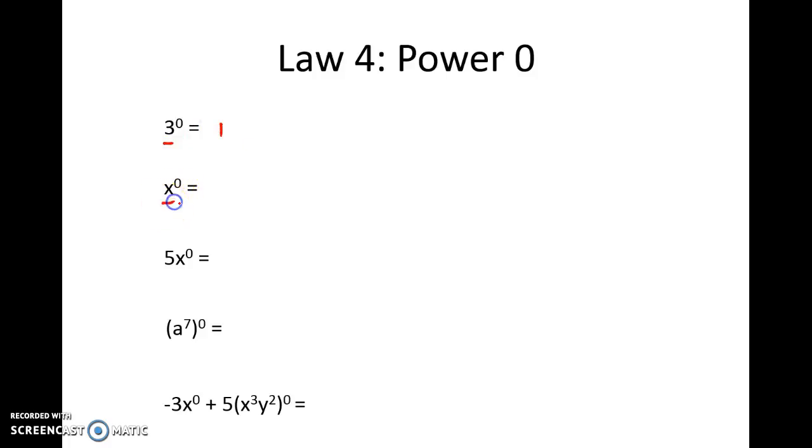Similarly x to the power 0, x being just a different base, will also give us 1. Now let's examine here. 5 times x to the power 0. Well I know x to the power 0 is 1. I just found that out. So I'm actually saying 5 lots of 1. And 5 lots of 1 is 5.